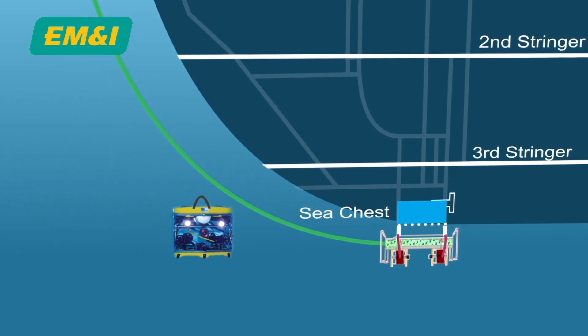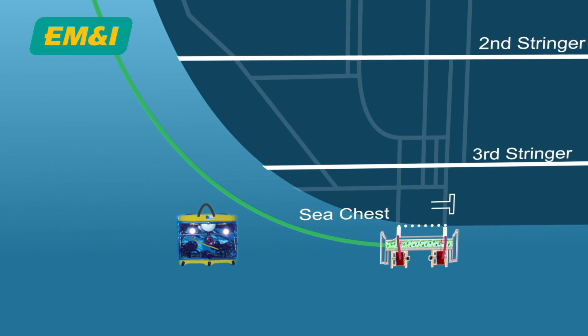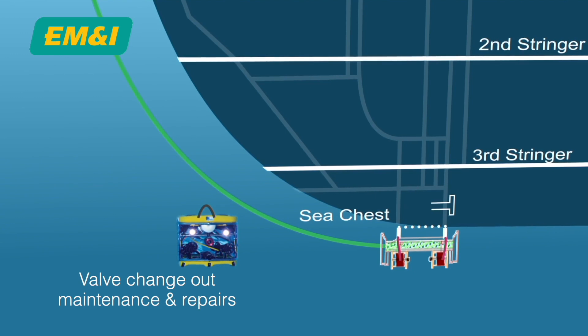The sea chest is then drained from inside the vessel or through valves in the blank. Once sea chest and sea tube isolation is confirmed, valve change out maintenance and repairs can be carried out from inside the vessel.